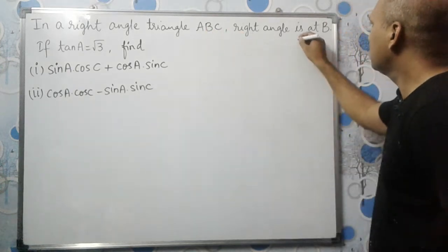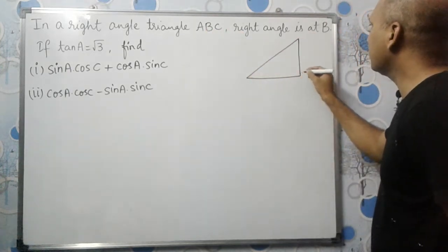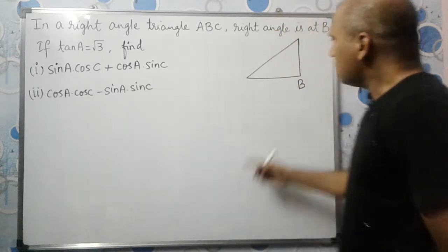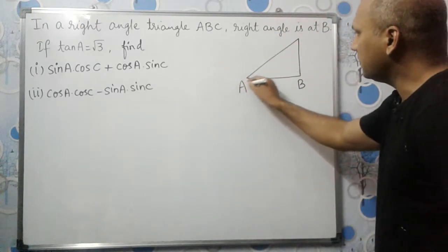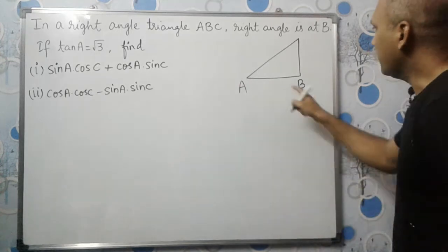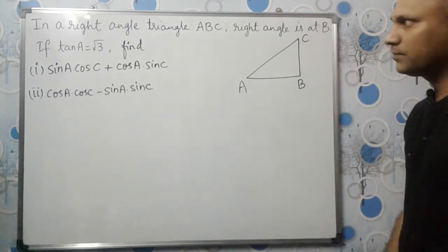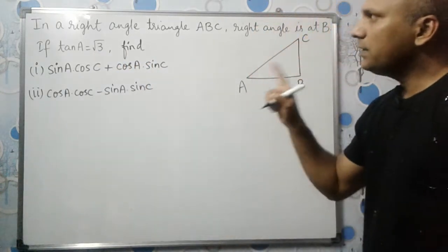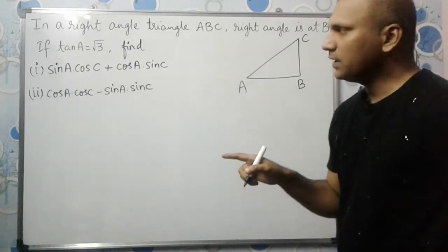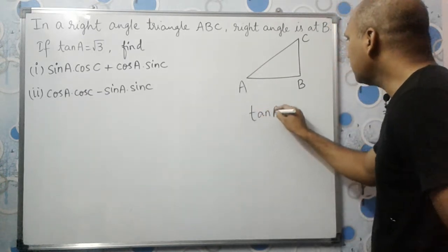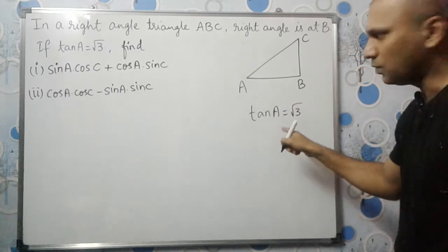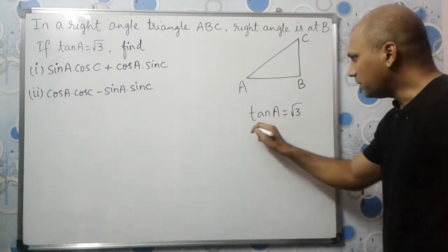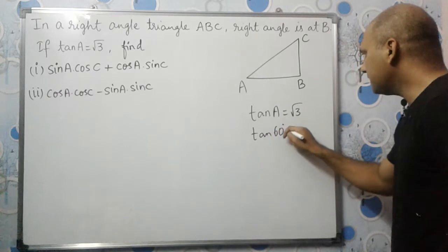Let us draw the diagram. In right angle triangle ABC, the right angle is at B. Tan A is root 3, so the base is AB. Now, tan A equals root 3. Had we learned the trigonometric table, we would know that tan 60 degrees equals root 3, so angle A equals 60 degrees.